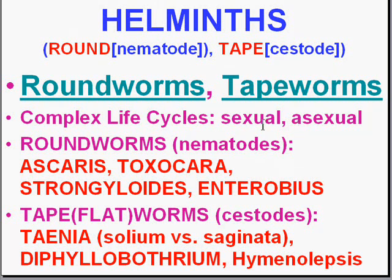Helminths have complex life cycles — both an asexual and a sexual phase — and they almost always involve many more than one other organism besides man. The four most common roundworms are Ascaris, Toxocara, Strongyloides, and the most common one you may see in the U.S., Enterobius, or the pinworm of the appendix. Among flatworms, the most common one in the United States is Hymenolepsis, but worldwide the beef tapeworm Taenia saginata, the pork tapeworm Taenia solium, and the fish tapeworm Diphyllobothrium latum also have worldwide importance.